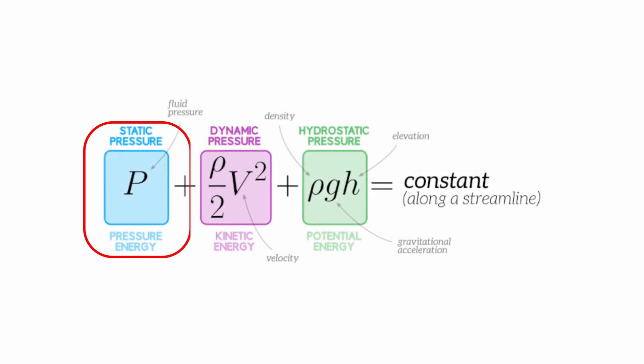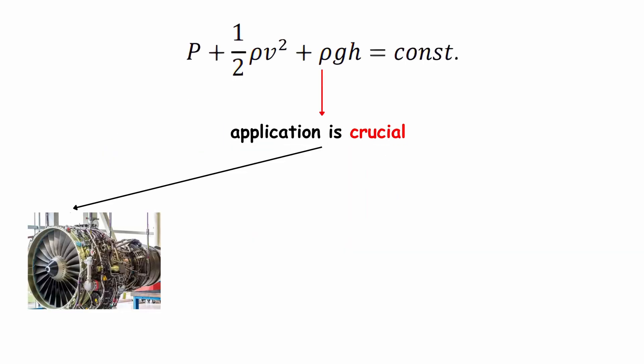The formula expresses that the sum of pressure, kinetic energy, and potential energy remains constant throughout an ideal fluid stream.